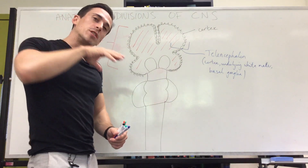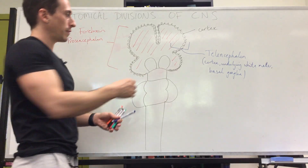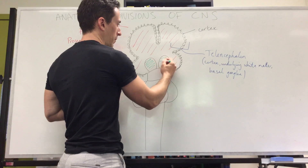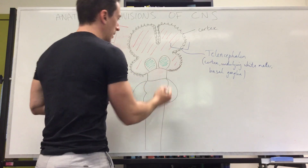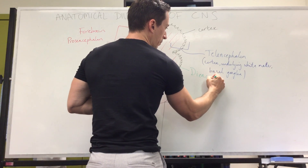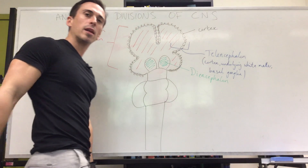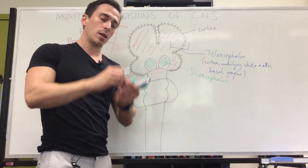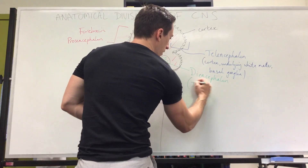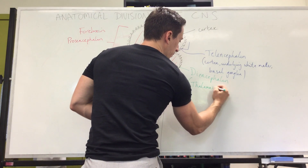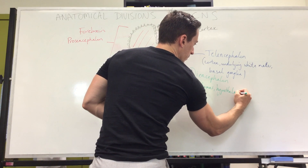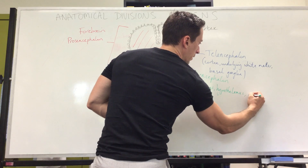The diencephalon is the next subdivision of the forebrain or prosencephalon, sitting in the deeper region. It's made up of the thalamus, the hypothalamus, the epithalamus, and the subthalamus.